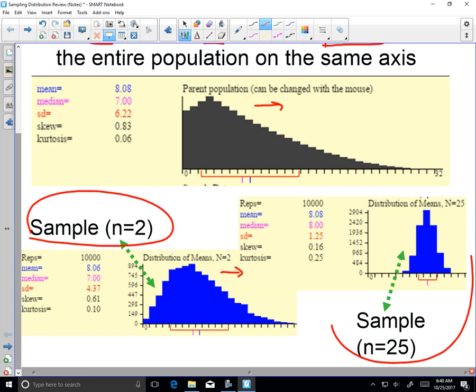But if we do a sample of size 25, and remember what we're doing, we're taking a sample of 25 values, creating one average and putting it into the distribution. And then we keep doing that for all possible samples in this population.